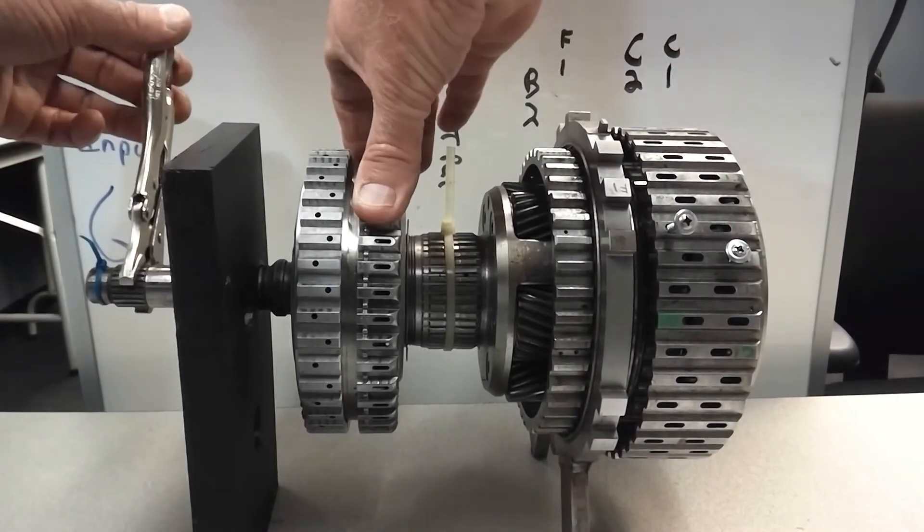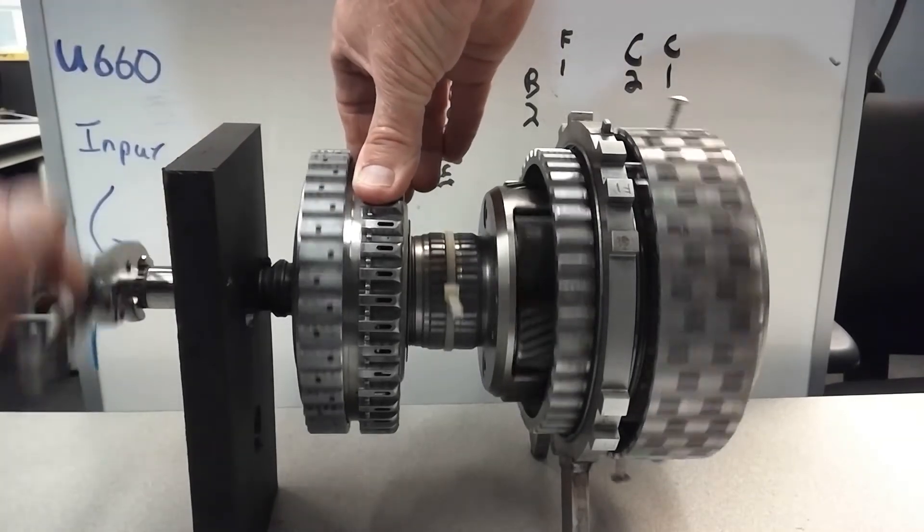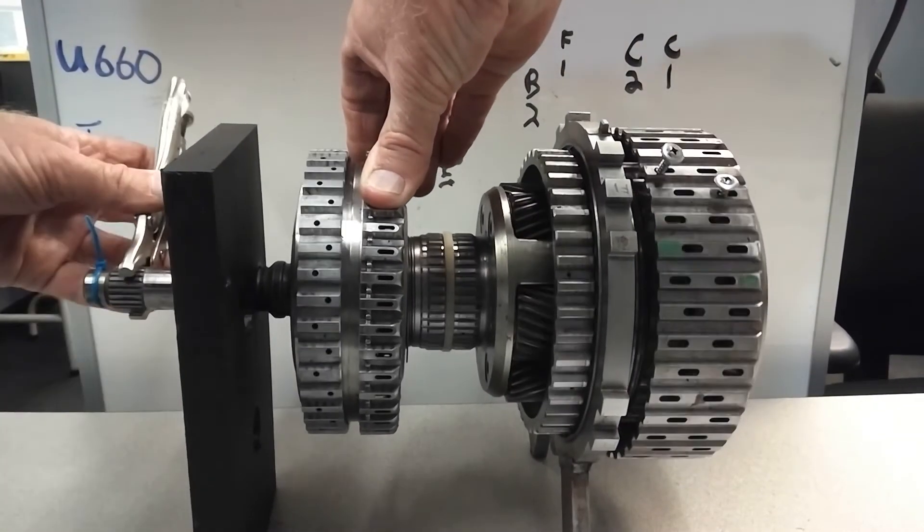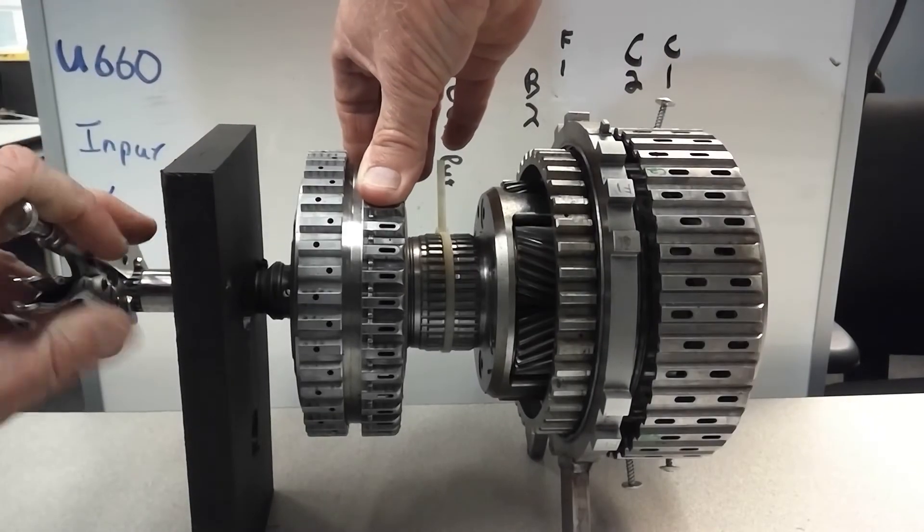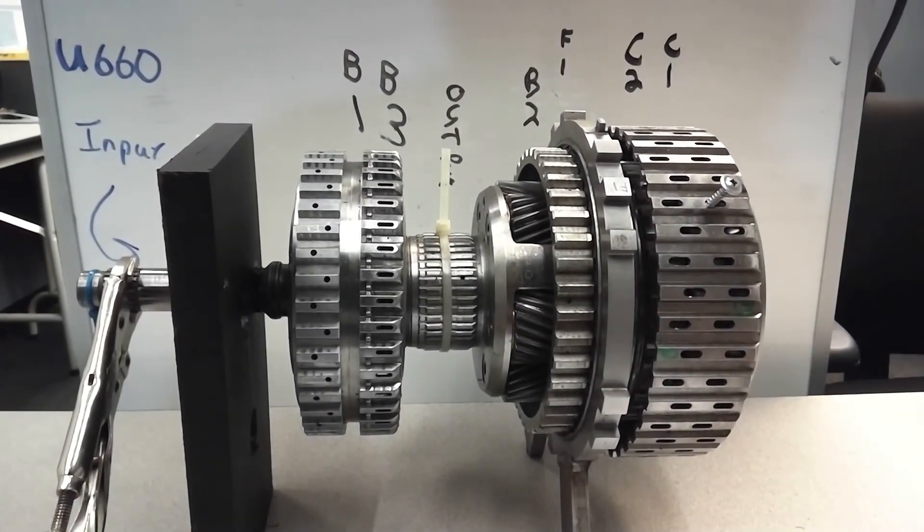So we'll reset it. And again, we're looking for about 1.4 to 1. There's one revolution. Almost a half. Bingo. So that's 1st through 3rd gear.